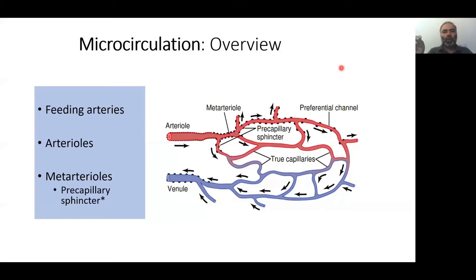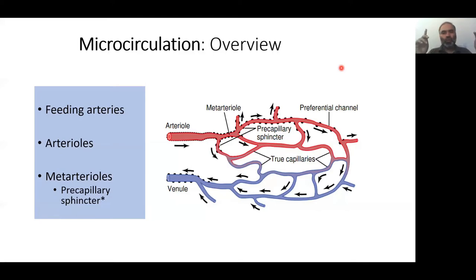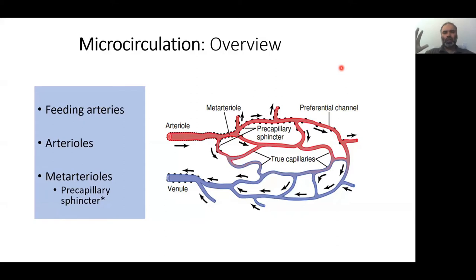Welcome back. We are now starting with the third chapter overall of the item, which is microcirculation. This particular chapter has two important concepts which relate to your examination. It's not a very overwhelming chapter. Please try to just skim through it. Don't go into the very detailed nitty-gritties that the textbook has discussed — the research aspects of measuring pressures and so on. Skip that bit; that's not really essential for examination purposes.